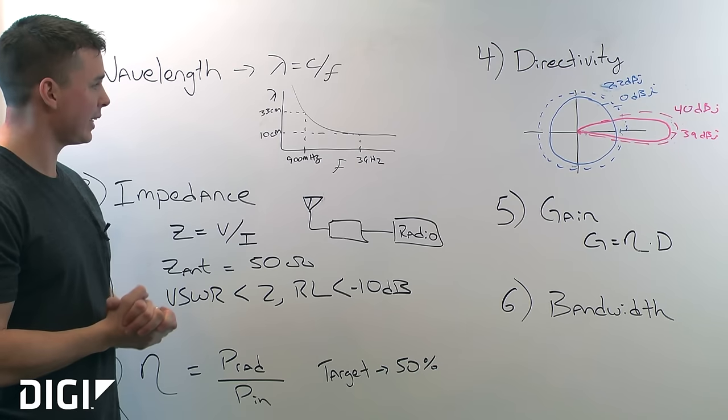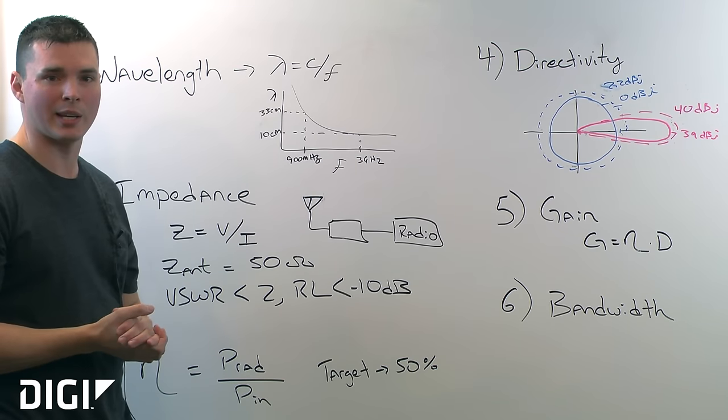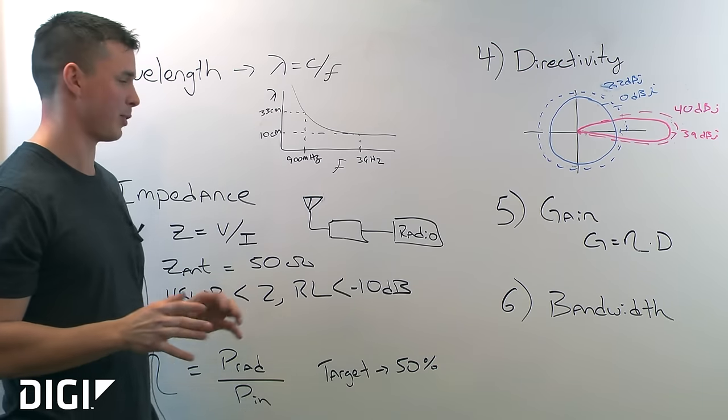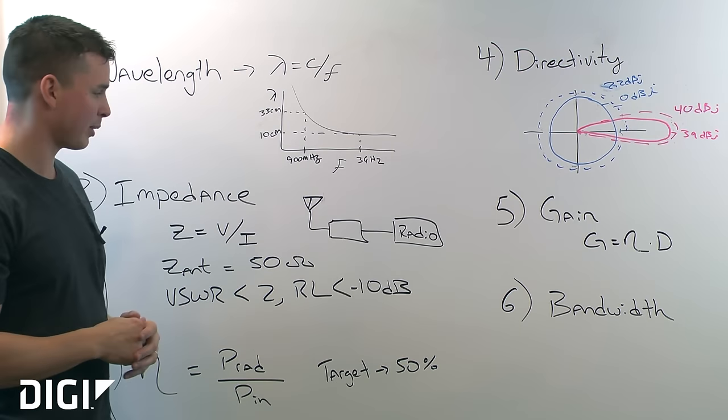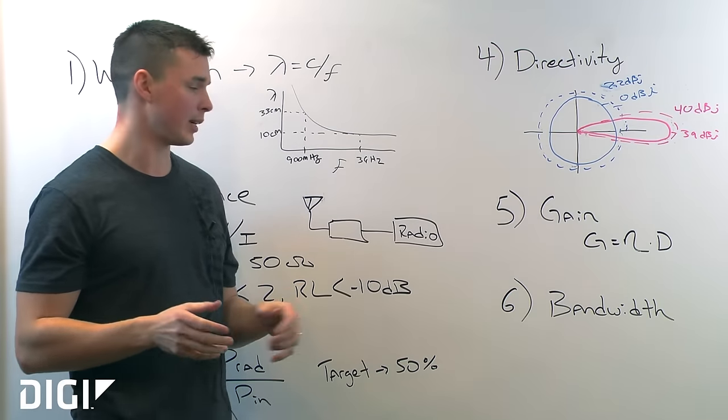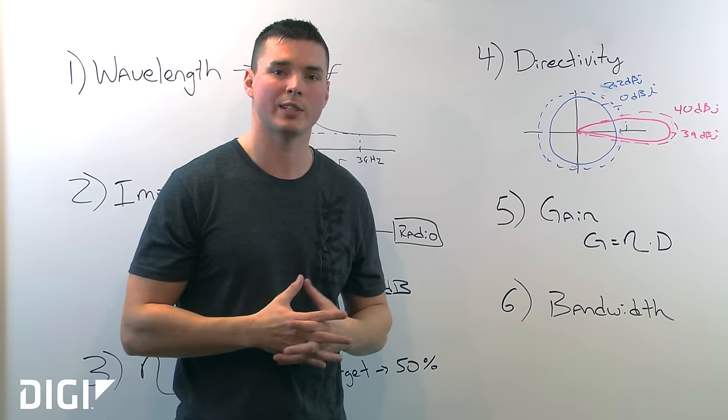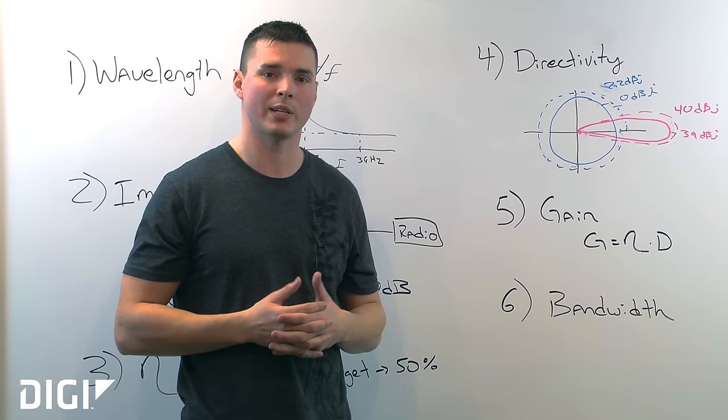I know this is a short crash course in antenna fundamentals, and there's only six antenna parameters here, and there are many more antenna parameters. But these are key antenna parameters for small wireless embedded antenna design, and I hope this short talk will help you with your next off-the-shelf antenna selection, or start you on your next custom antenna design.